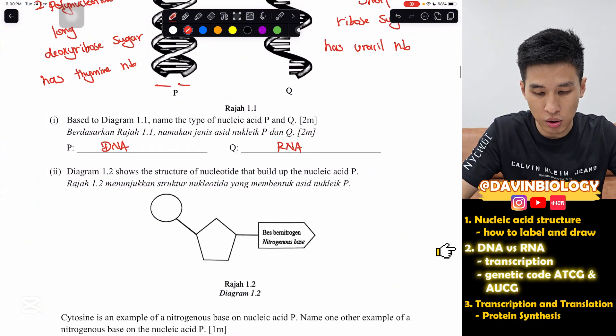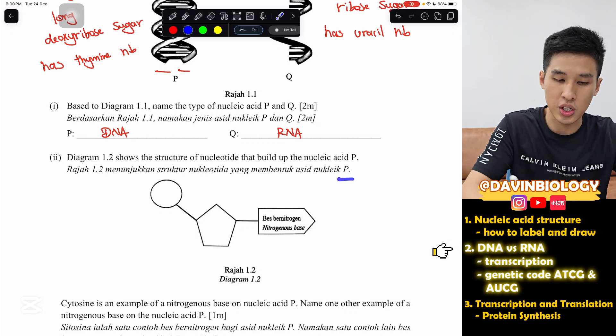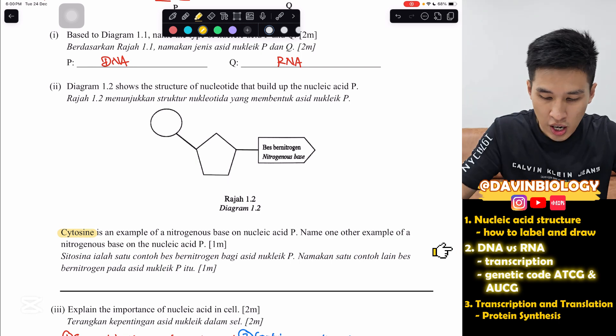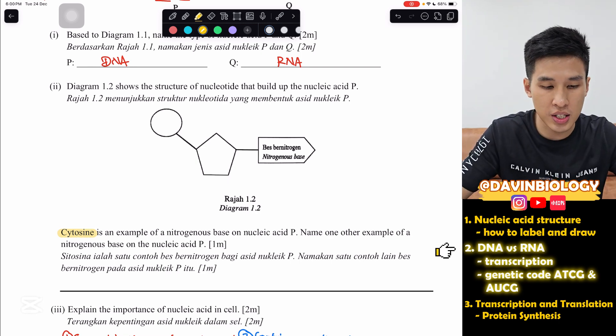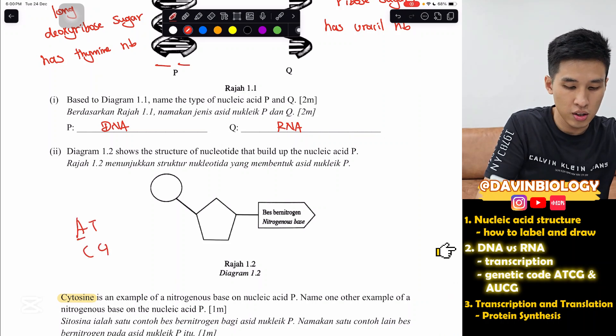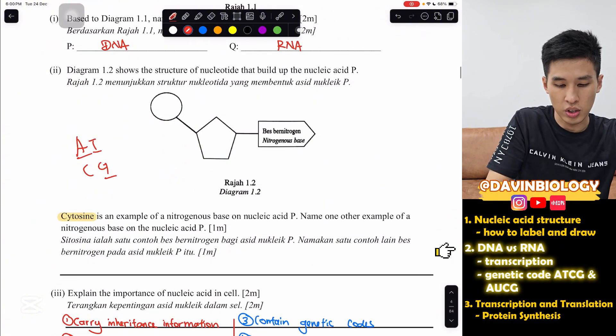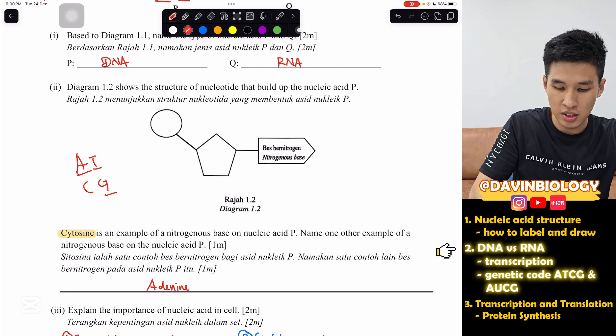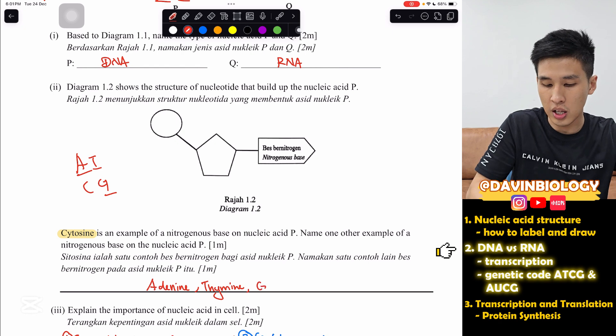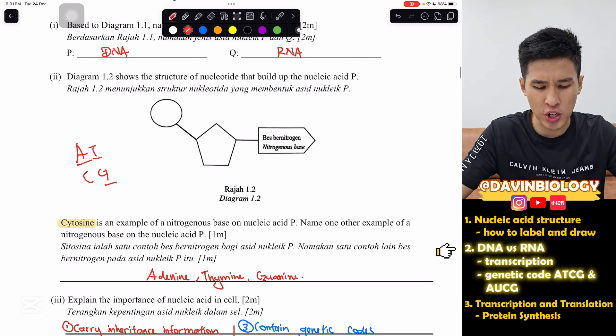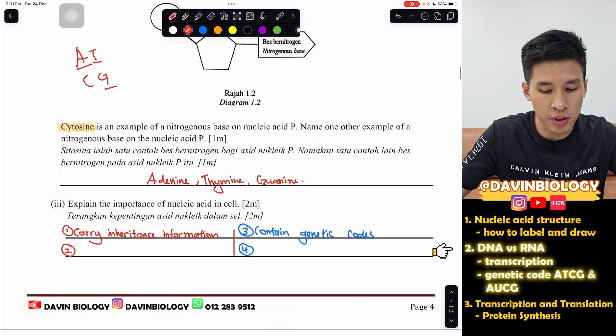They gave us a nucleotide that forms P, which is our DNA. They tell us that the nitrogenous base that they have here is cytosine. Name one other example of nitrogenous base. So, besides C, you still have A, T, and G. Either one will do. For this question, you have to spell the whole thing out. So, A, adenine. T, thymine. C is the question given already, cytosine. And the last one is guanine.